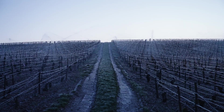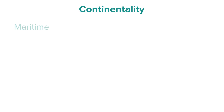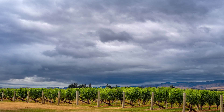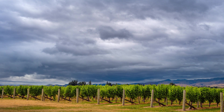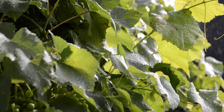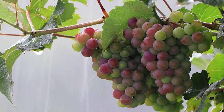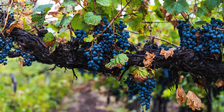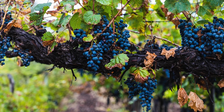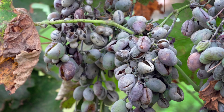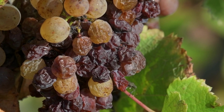Continentality also affects expected weather patterns. Being close to a large body of water can increase humidity, cloud cover and rainfall. Maritime climates are defined by having rainfall evenly spaced through the growing season. The higher rainfall can cause challenges during flowering or fruit set, reducing yields, or during harvest, causing grapes to swell and producing dilute flavours. These humid conditions also increase the risk of fungal diseases like botrytis.